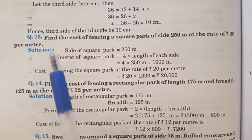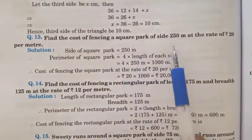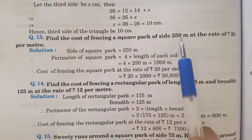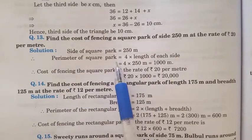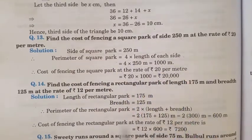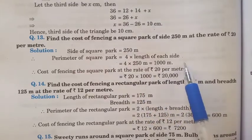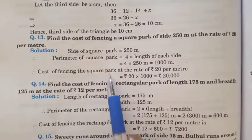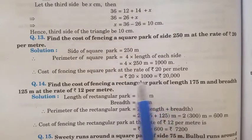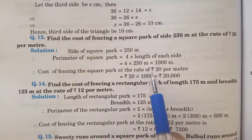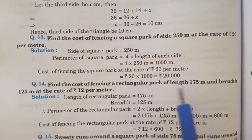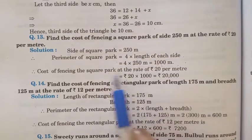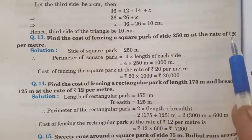Question 13: Find the cost of fencing a square park with side 250 m at the rate of Rs. 20 per meter. Side of square park is 250 m. Perimeter of square = 4 into side = 4 into 250 = 1000 m. Cost of fencing: 1 meter costs Rs. 20, so 1000 into 20 equals Rs. 20,000. We first find the perimeter, then multiply by the rate of Rs. 20 per meter.